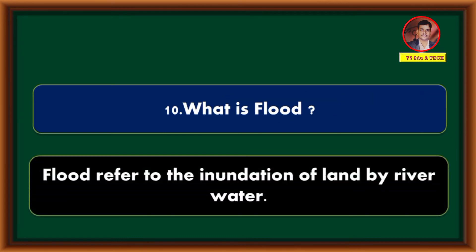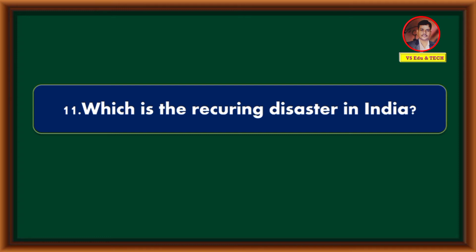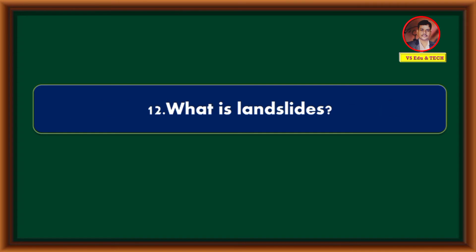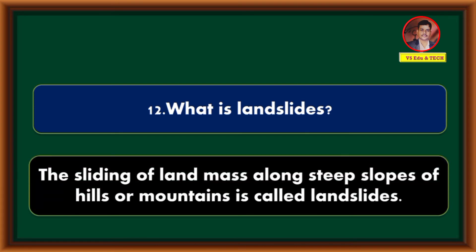What is a flood? Flood refers to the inundation of land by river water. Which is the recurring disaster in India? What is a landslide? The sliding of land mass along steep slopes of hills or mountains is called a landslide.